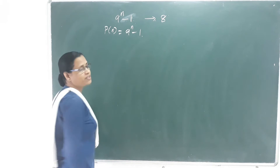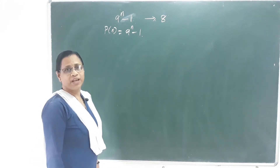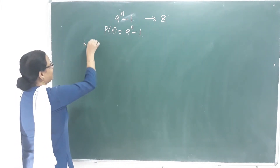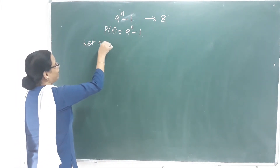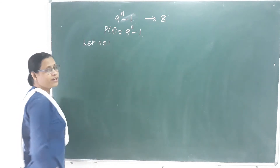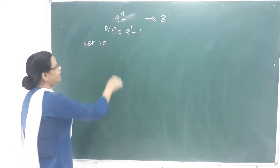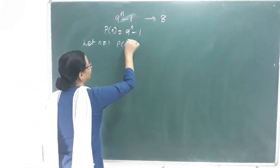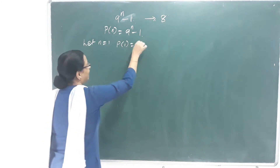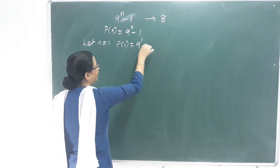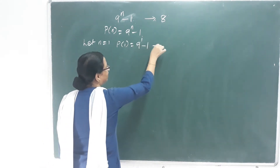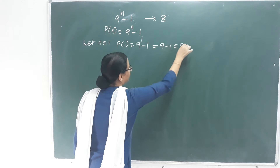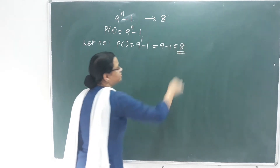Second step: let N equal to 1. P of 1 is equal to 9 raised to 1 minus 1, which equals 9 minus 1, which equals 8.